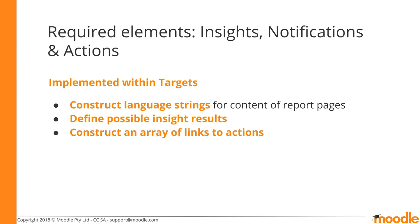Currently, notifications are sent to those with the capability moodle/analytics:listinsight in the current context. This notification consists of a standard language string, insight_info message, plus the name of the model, so no specific code is required in the target to implement notifications. In addition to the required elements for targets discussed previously, implement prediction_actions to construct a list of URL links to actions the recipients can take.